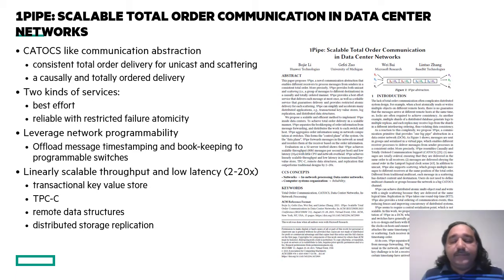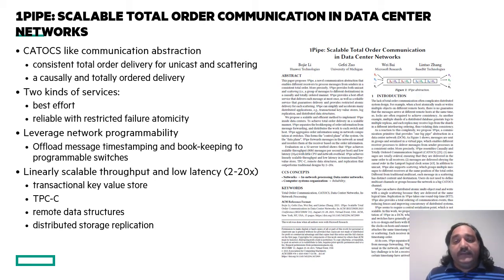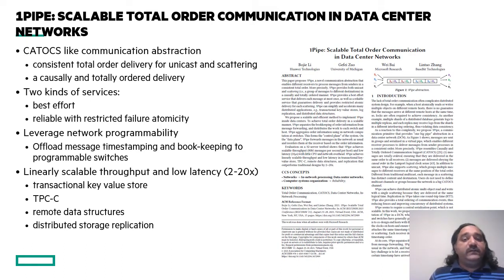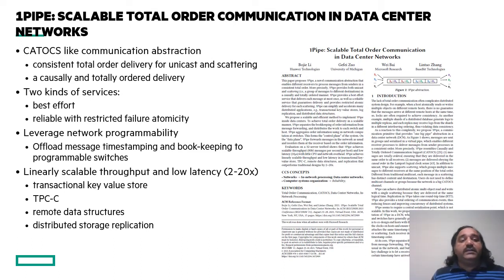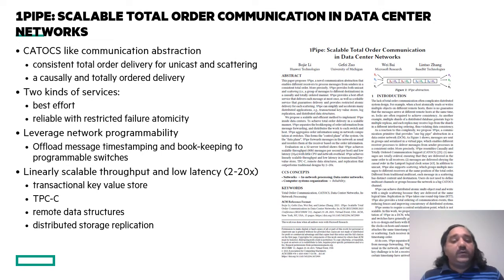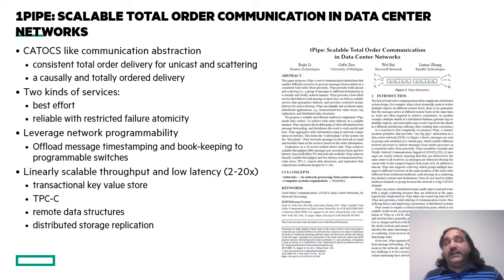This brings us to the first paper I want to review. Note that this is not necessarily the presentation order in the technical session. The paper is called One Pipe: Scalable Total Order Communication in Data Center Networks, which tries to provide the causal and total order communication abstraction we discussed, offering two kinds of services: best-effort as well as reliable with restricted failure atomicity for group distribution of messages.